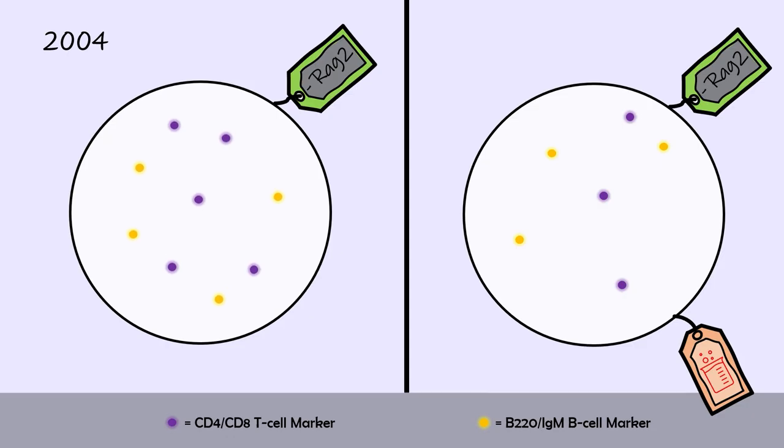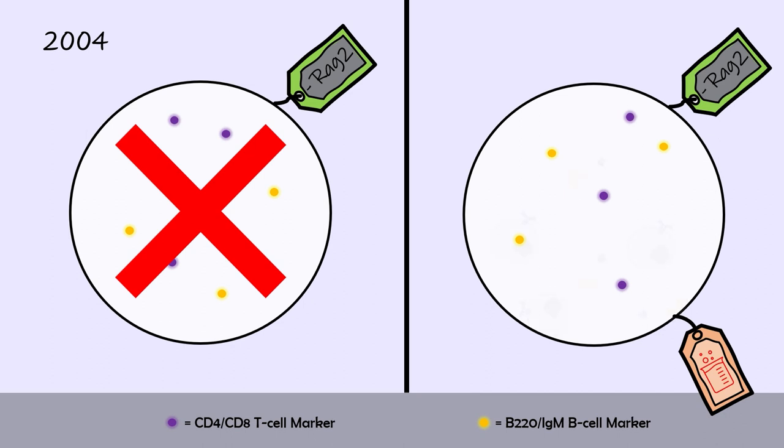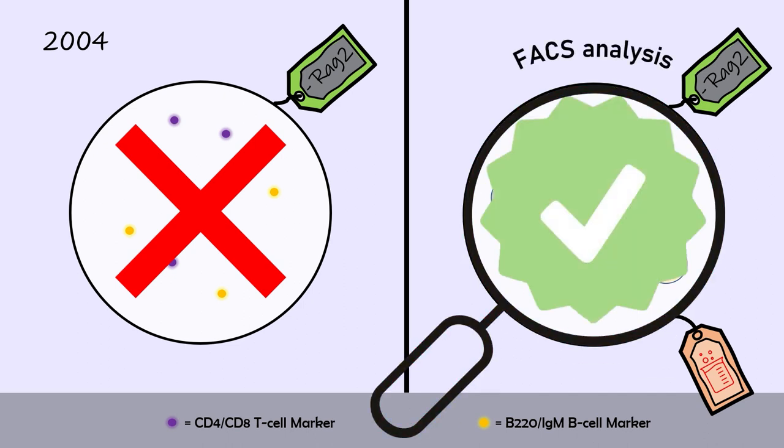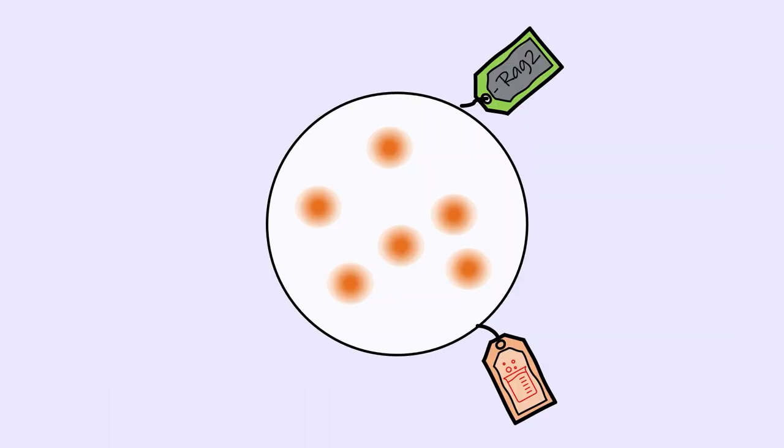Normally, RAG2 deficient mice have no mature lymphocytes, such as B and T cells. However, using specific antibody B and T cell markers, Hochedlinger was able to detect the presence of these lymphocytes in the RAG2 deficient chimera mice grown in his experiment. They concluded that the B and T cells found in the mice were a result of the transplanted embryonic stem cells becoming pluripotent and differentiating into these immune cells.